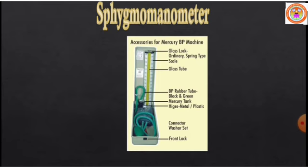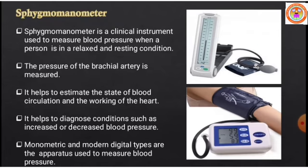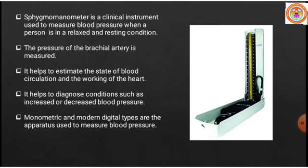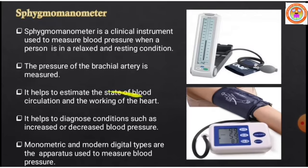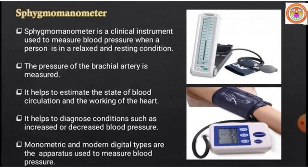Sphygmomanometer is the device or instrument used clinically to measure the blood pressure of an individual during a relaxed and resting condition, or even in different physical conditions. The pressure in the brachial artery is measured. It helps to estimate the state of blood circulation and the working of the heart. It helps to diagnose conditions such as increased or decreased blood pressure.